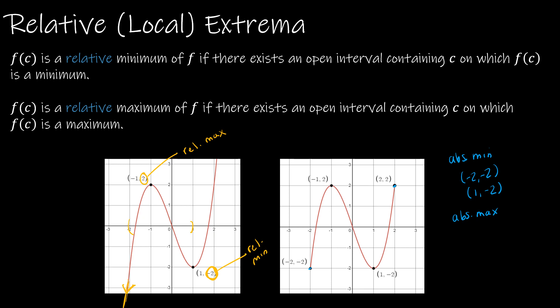Remember, we're talking about the y value. So the absolute min is that f(c) is equal to negative two, right? So the y value is negative two. Now, where does it occur? Well, it occurs at both negative two and one.